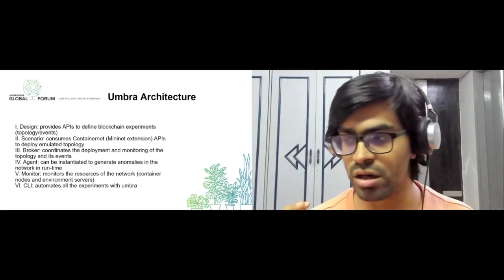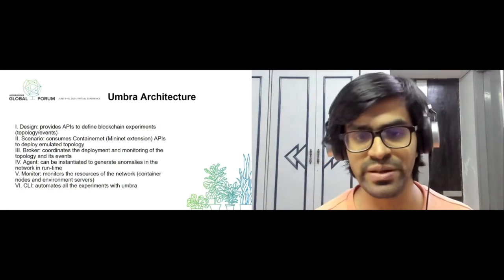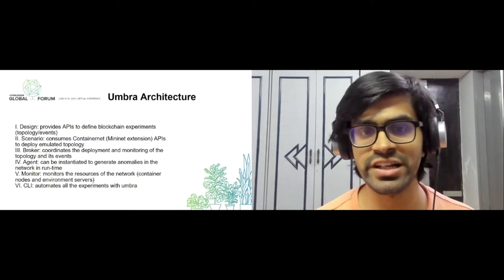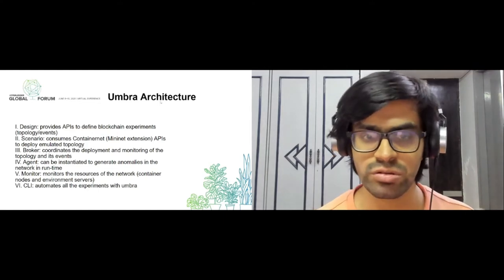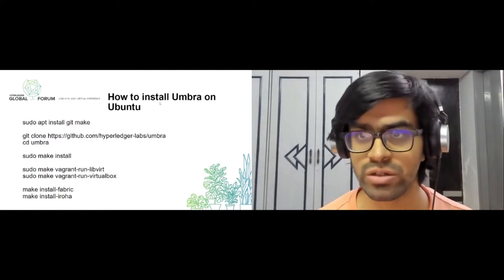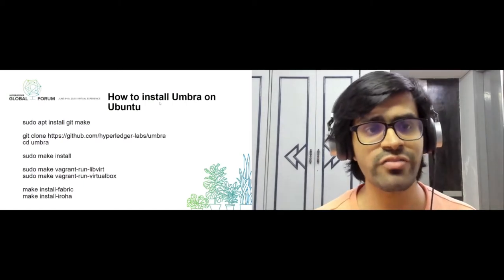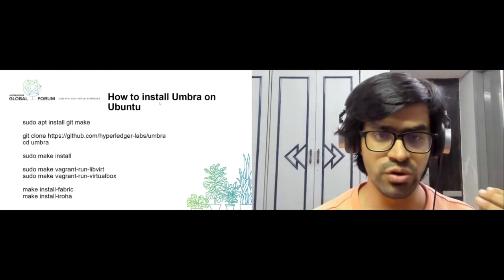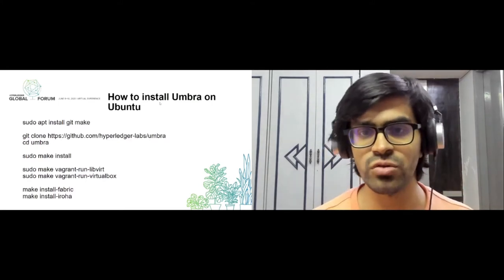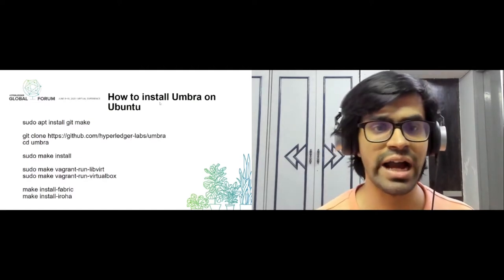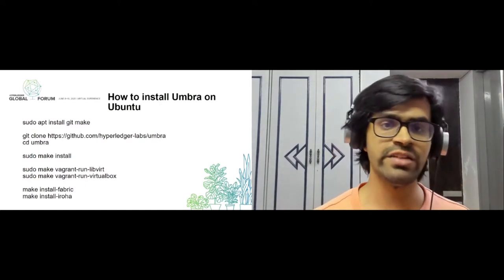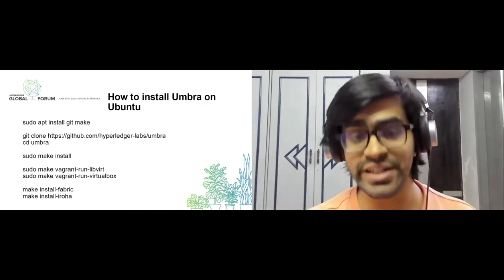The Umbra CLI is what you use to automate experiments, do the installation, and make sure all the different components within Umbra are properly installed. If you are trying to create an experiment of your own, I definitely recommend going through the Umbra CLI documentation. To install Umbra on Ubuntu, the first step is to install git and make packages, using sudo apt install git and make.